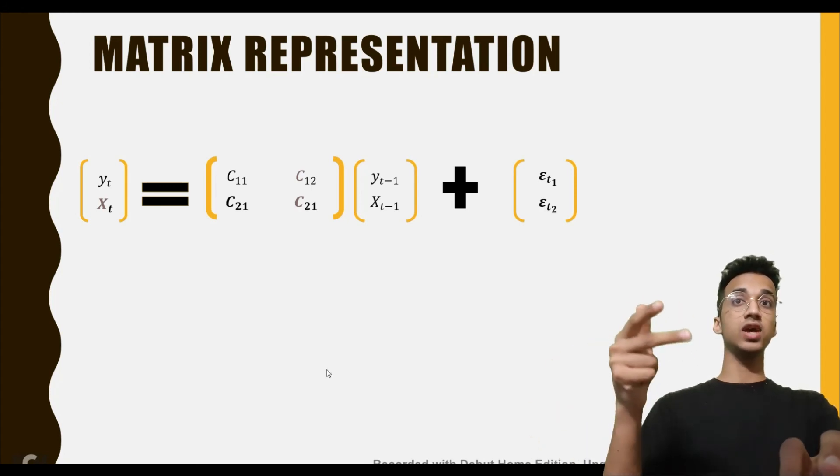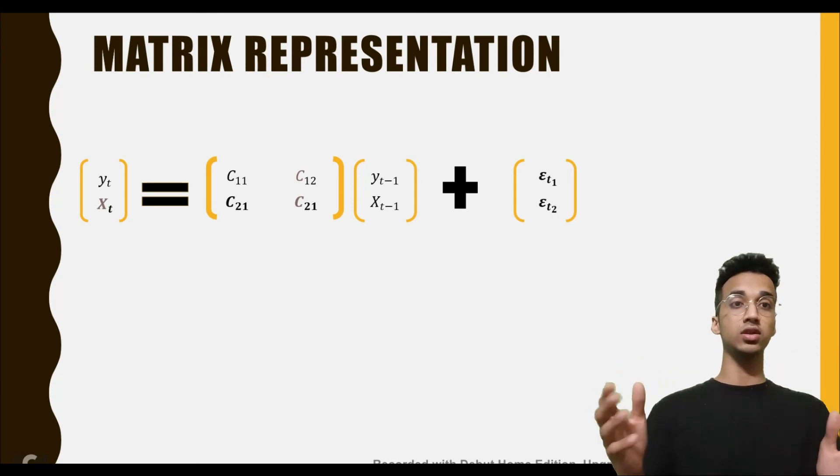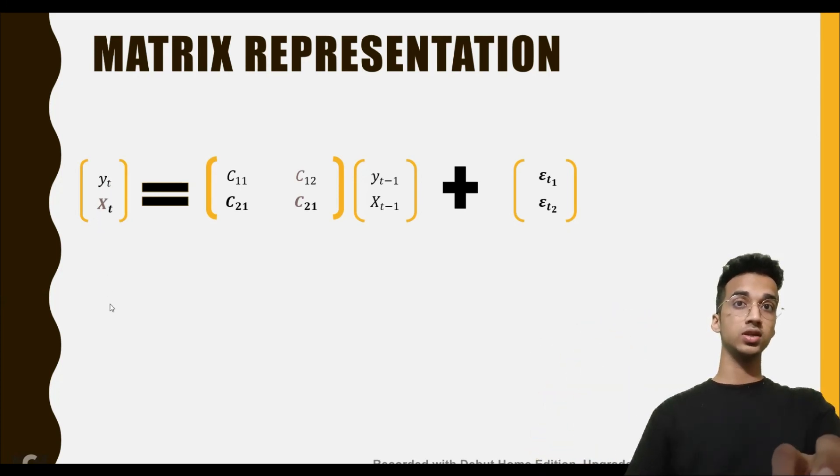When you open this matrix, you're going to get the same equation as before. If you have multiple variables—in this case we have only two related variables, but there could be 10 variables which are related to each other—you will simply have more number of rows: y_t, x_t, similarly you can have some variable z_t and so on. The number of rows in this matrix is going to increase.